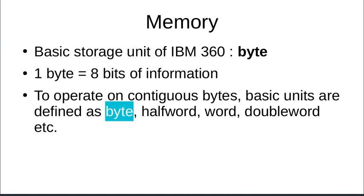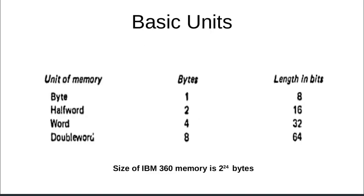Each basic unit has its own size. One byte is 8 bits. A half word equals 2 bytes, which is 16 bits. A word equals 4 bytes, which is 32 bits. A double word is 8 bytes, which is 64 bits. The size of IBM 360 memory is 2 to the power 24 bytes. This table we need to remember.